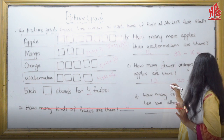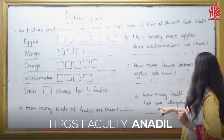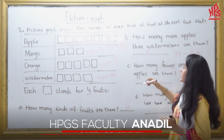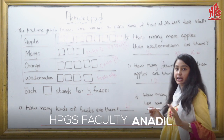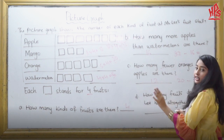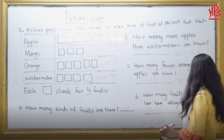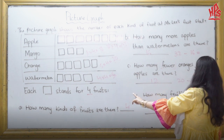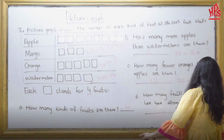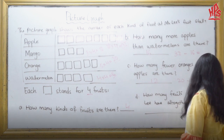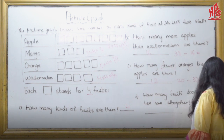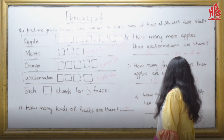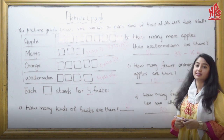Then the last question: How many fruits does Mr. Lee have altogether? Altogether means you have to add all of them. So we have 32, then 12, then 20, and then 16. Adding altogether gives us 80. So altogether Mr. Lee has 80 fruits. Thank you.